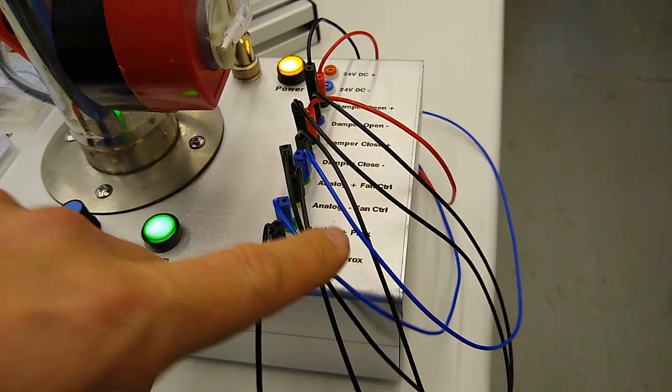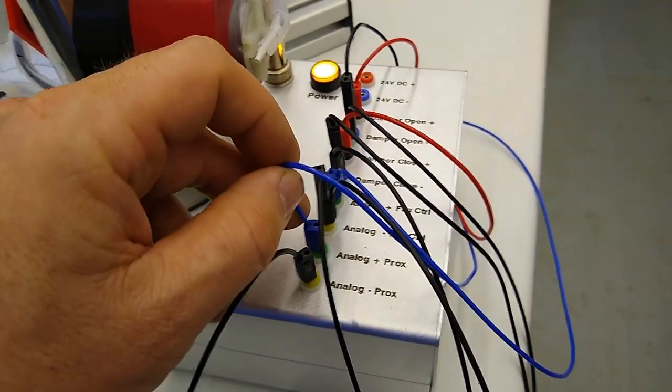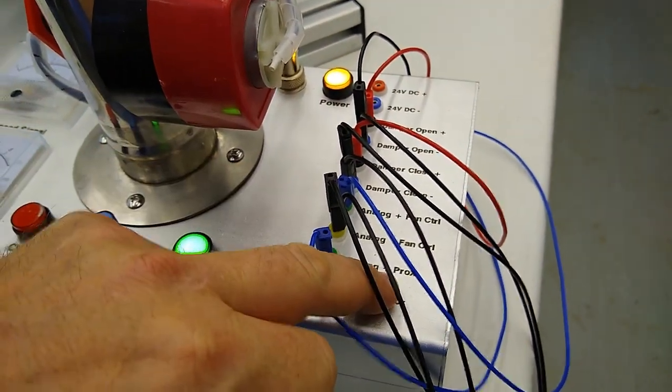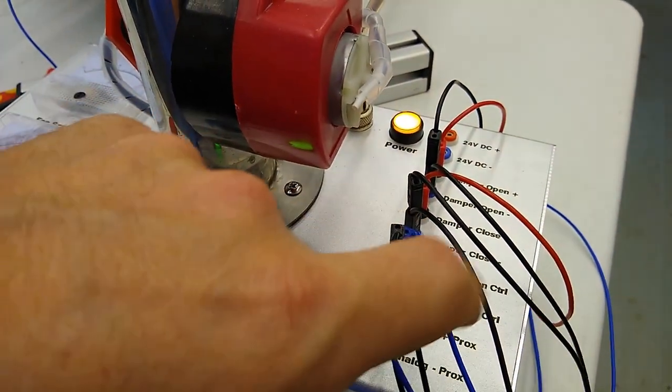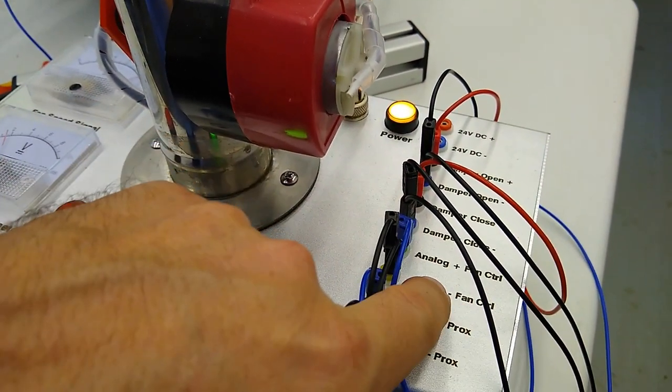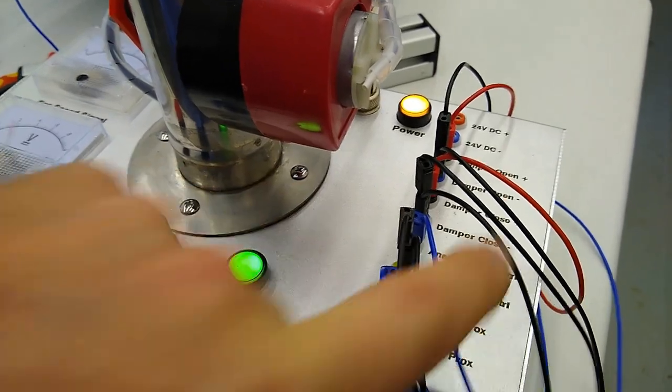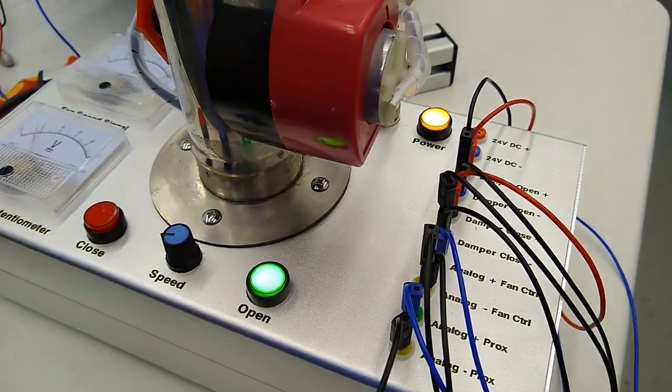And finally we're going to have two more wires here and that's going to be our analog plus from our prox which is our level sensor that lets us know where the ball is up and down. And we're going to have our analog plus fan control which is going to be our command to the fan in here.